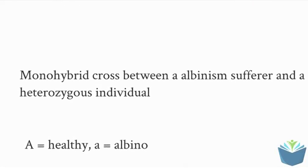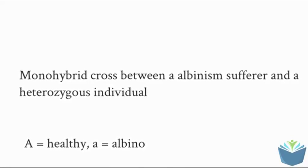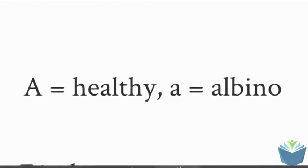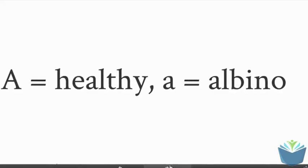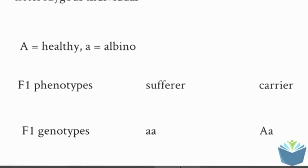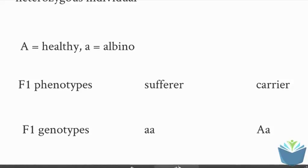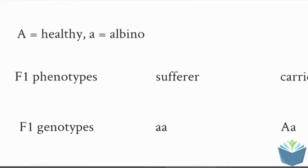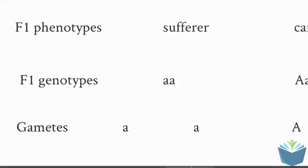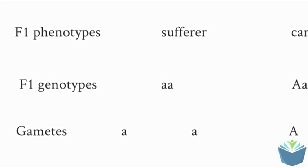So if we have a look at a monohybrid cross between an albinism sufferer and a heterozygous individual. In this case, the two possible alleles for this are the dominant one which is capital A which is healthy and the lowercase a which is albino. We are crossing a sufferer with a carrier for this. So the F1 genotype, so the first generation, the sufferer has small a, small a and the F1 genotype for the carrier is big A, small a.